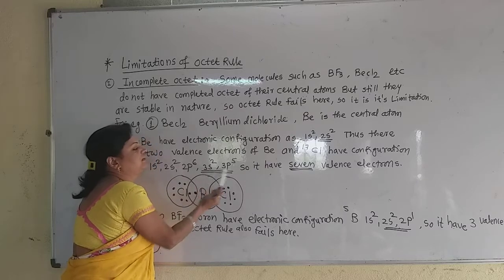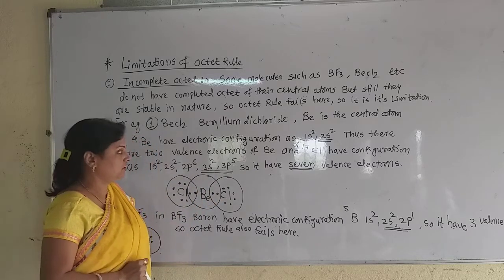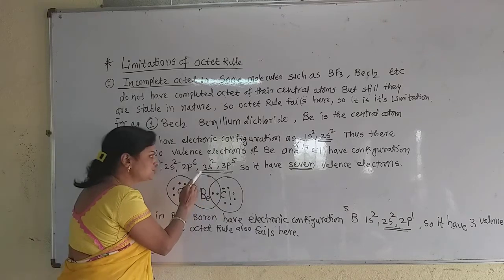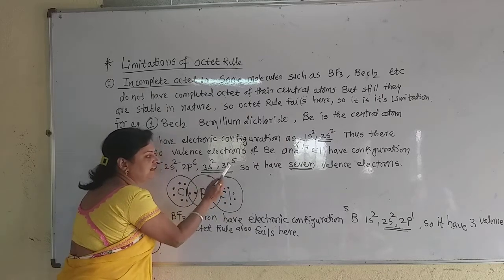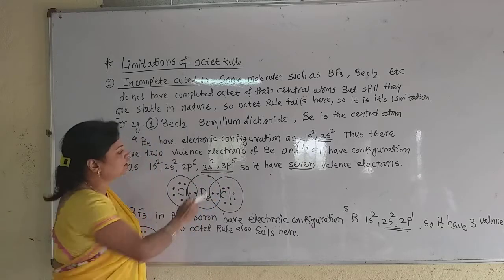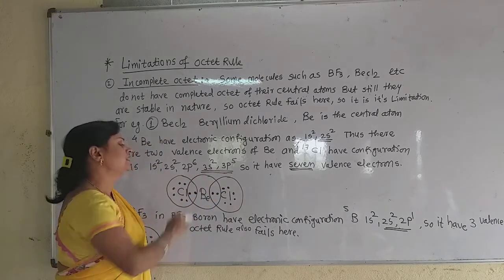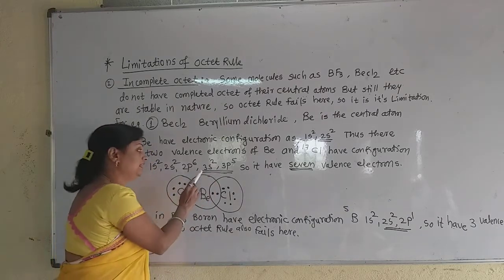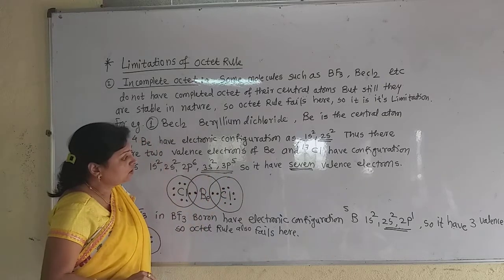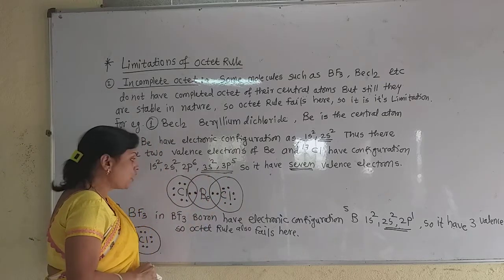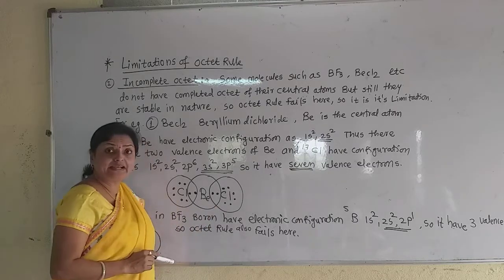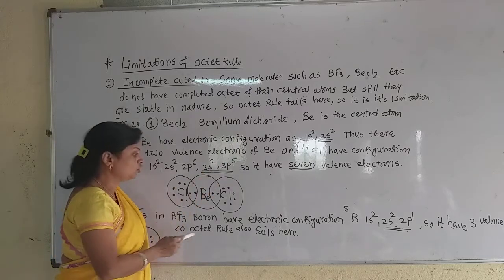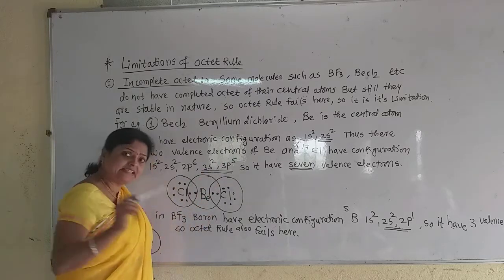Now this third main shell — that is the valence shell — contains these two sub-shells. This valence shell contains how many valence electrons? 5 plus 2, because only the valence shell electrons take part in bond formation. So there are 7 valence electrons in the chlorine atom. Both chlorine atoms in beryllium dichloride have 7 valence electrons each.